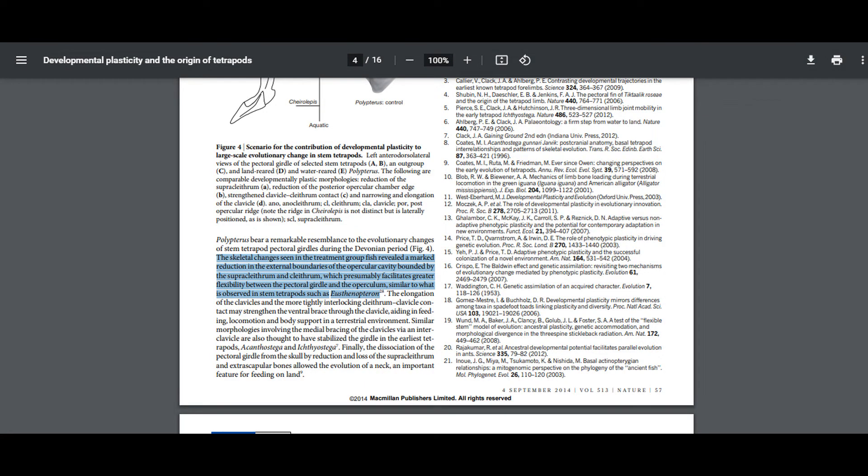Further, the skeletal changes seen in the treatment group fish revealed a marked reduction in the external boundaries of the opercular cavity bounded by the supracleithrum and cleithrum, which presumably facilitates greater flexibility between the pectoral girdle and the operculum, similar to what is observed in stem tetrapods such as Eusthenopteron. Thus, simply by raising Bichirs in a different environment, they exhibited features like those of stem tetrapods. A similar process could have occurred 400 million years ago, leading ultimately to the emergence of tetrapods.